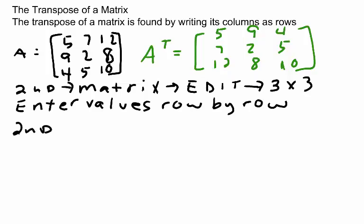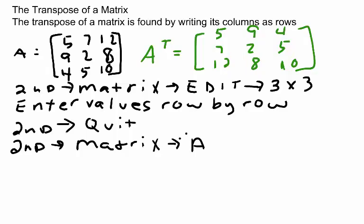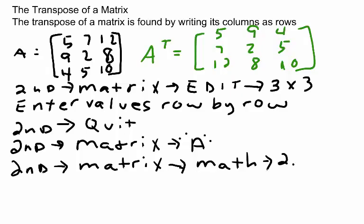Then, you'll press the second key and the quit key. Then you'll press 2nd, matrix. Select A and press enter. Then you'll hit the second key again, matrix. And this time you'll highlight the math key. And you'll select option 2, which just shows a T. And you'll press enter. And you'll get the numbers for the transpose matrix.